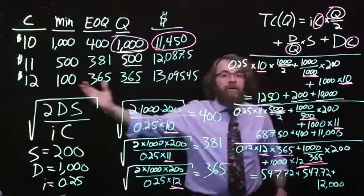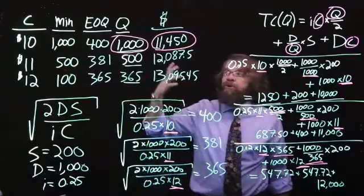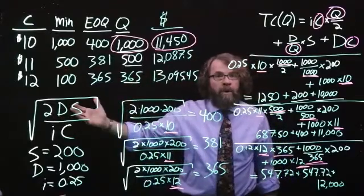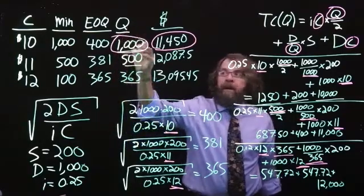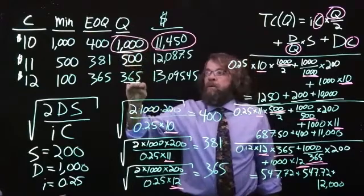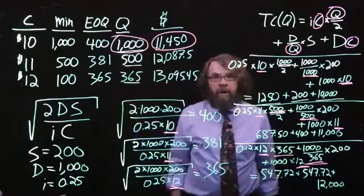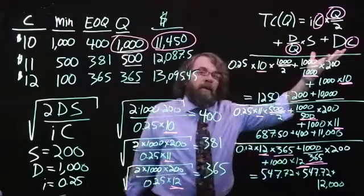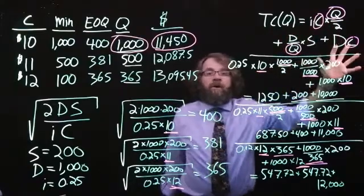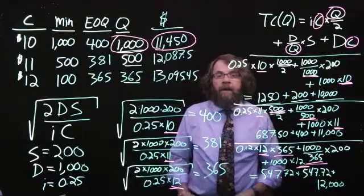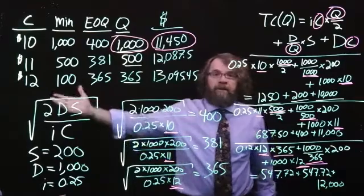So again, we start with the EOQ. We calculate the EOQ for each cost. If that EOQ is too small to meet the minimum quantity required to get that price, then we will evaluate our costs using that minimum quantity, the 1,000 or the 500. When the EOQ was larger than the minimum quantity, in this case 365, we evaluate the total cost of buying 365 units at a time. Then we use this cost function. We looked at the holding cost plus the ordering cost plus the cost of the goods. We added them all up and chose the answer with the lowest total cost, in our case buying a thousand units at a price of $10 each. I hope this has been helpful.